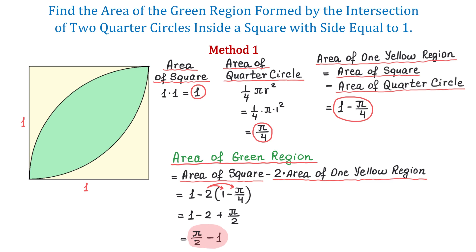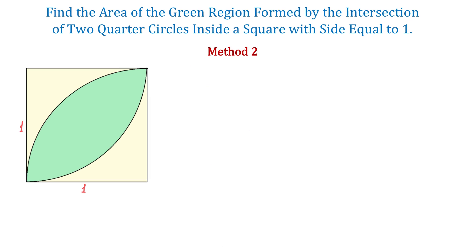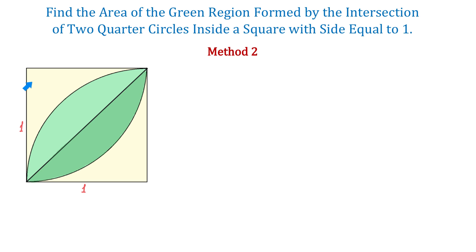Now let's see the second method. With this method, we will split this green area into two equal parts. To find the area of one of these parts, we will find the area of a quarter circle and subtract the area of this triangle.